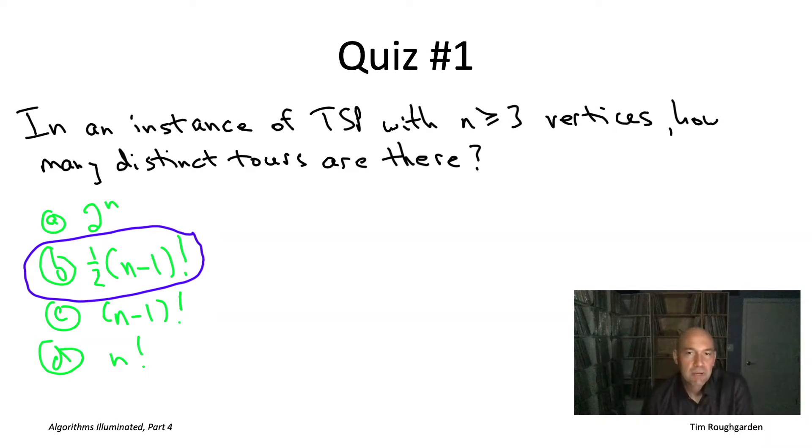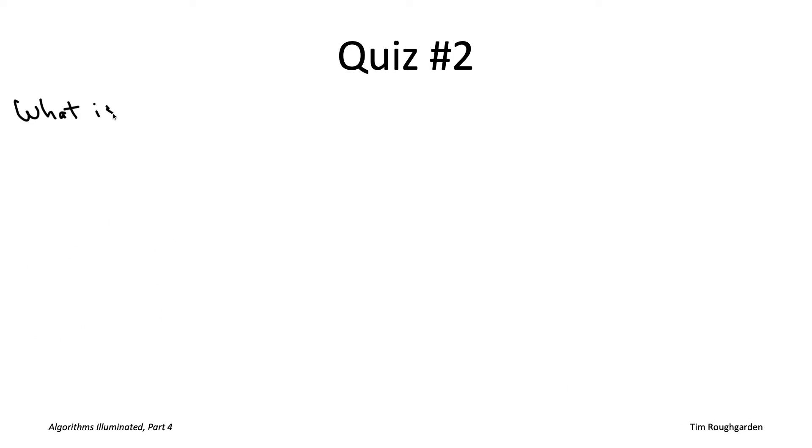So that's a lot of tours, but it does at least show that the traveling salesman problem can be solved in a finite amount of time, finite but large amount of time. If nothing else, you could solve the traveling salesman problem by exhaustive search, systematically enumerating each of these one half times n minus one factorial tours, and remembering the best one. Try exhaustive search out yourself in a four vertex example.